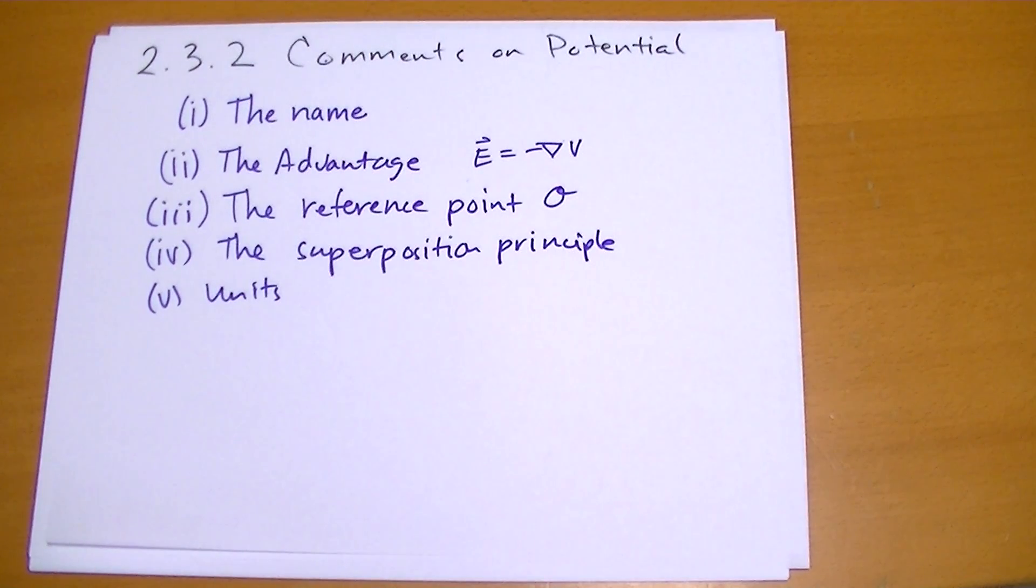Or somebody else might say, no, I'm going to use where I live as elevation zero. Usually there's some reference point O that's kind of intuitive. For most problems, the ideal value of O is the electric potential way out at infinity. Other times you're going to use something like the surface of this charged sphere as the reference point O.